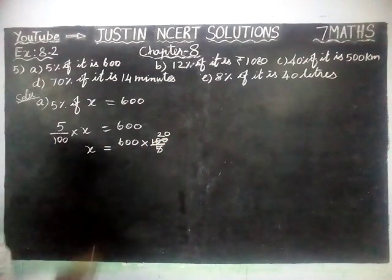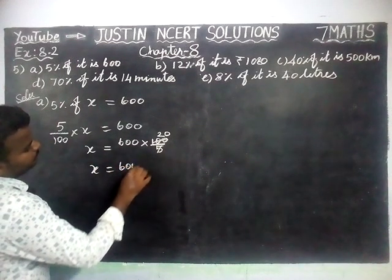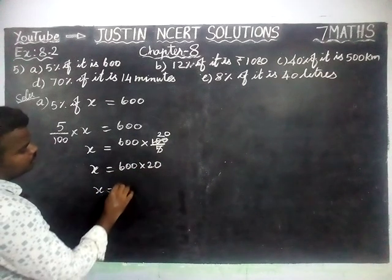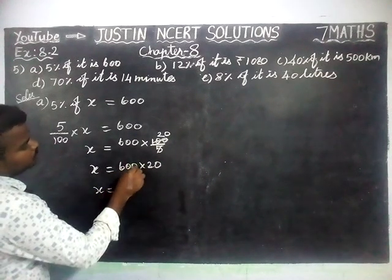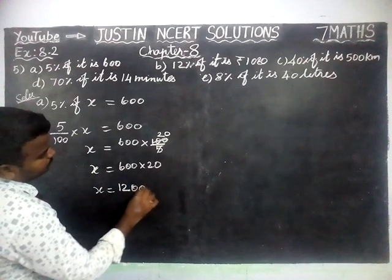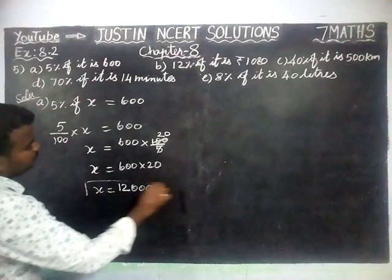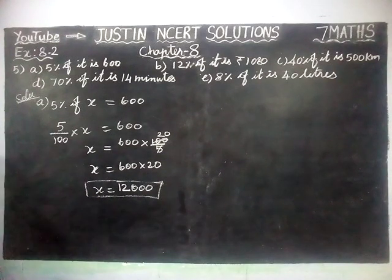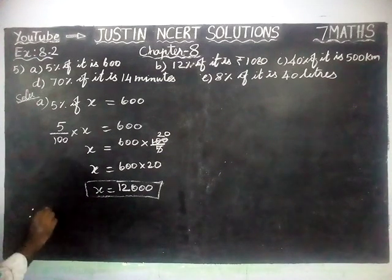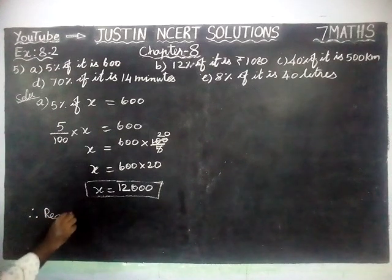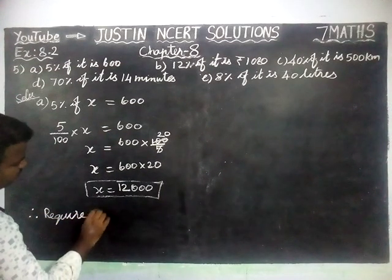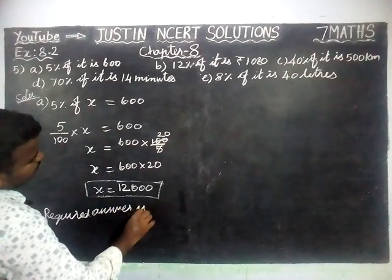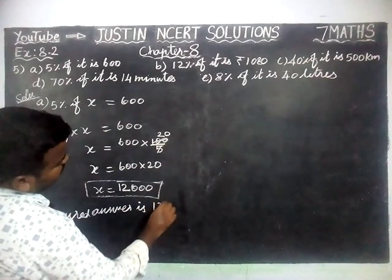25 twos are 100. So X is equal to 600 into 20. X is equal to 6 twos are 12, with three zeros. Therefore, the required answer is 12,000.